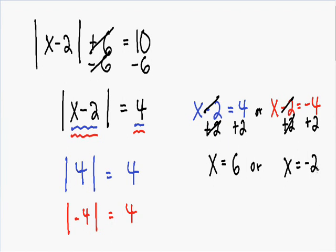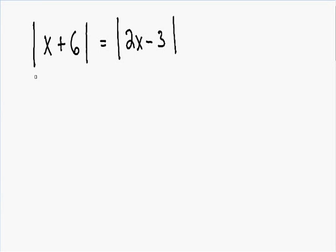Now let's go over a harder example. Here we have the absolute value of x plus 6 is equal to the absolute value of 2x minus 3. This example is a little different because we have absolute values on both sides of the equation. But if you erase one set of absolute values you're still going to get the correct solution. So I'm erasing the absolute values on the right side, and now we solve it the same way as our previous example.